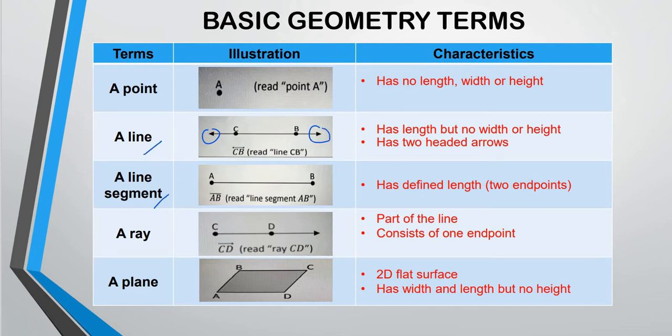How about a line segment? AB dash. Read line segment AB. Has defined length two endpoints. Yeah, we have two endpoints. So if the line have two endpoints, basically it's a line segment.